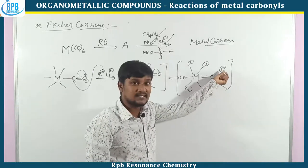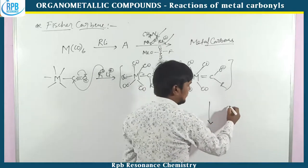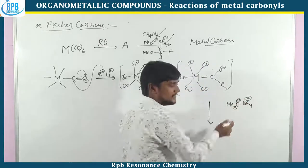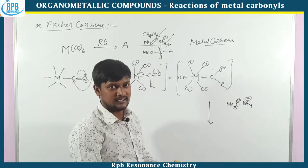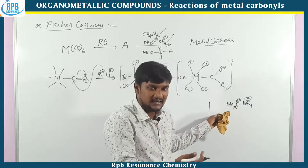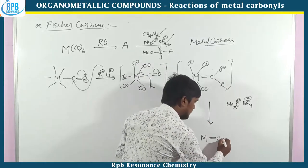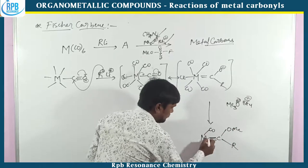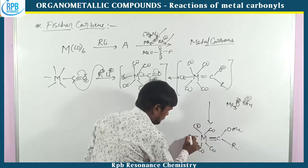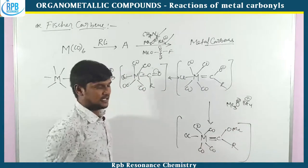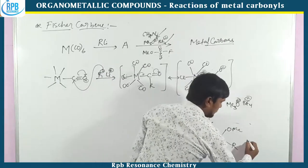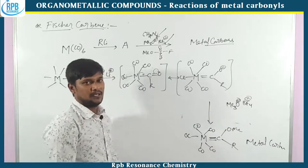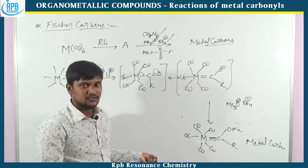The oxyanion captures the methyl group from, for example, BF4 methylating agents, and produces a metal double bond to C with an OR group attached. That is nothing but the metal carbene system — a metal–carbon double bond. This is the method to synthesize Fischer carbene.